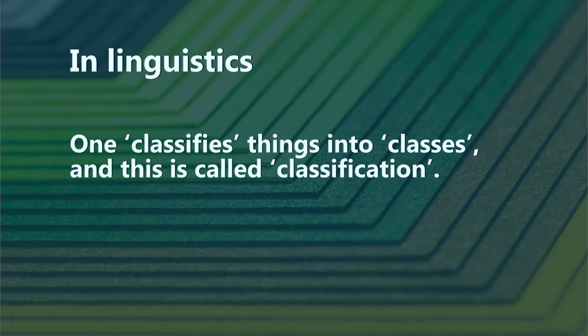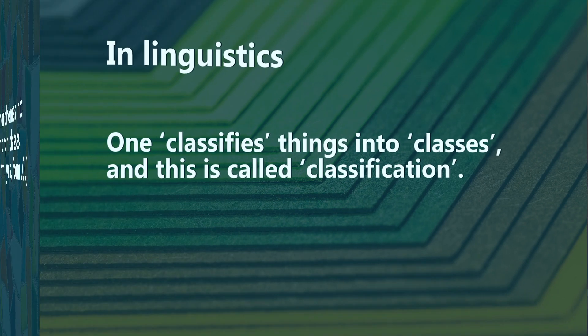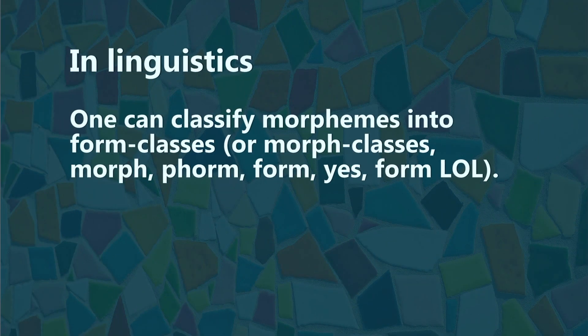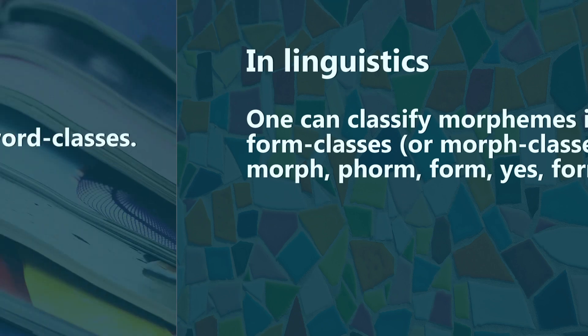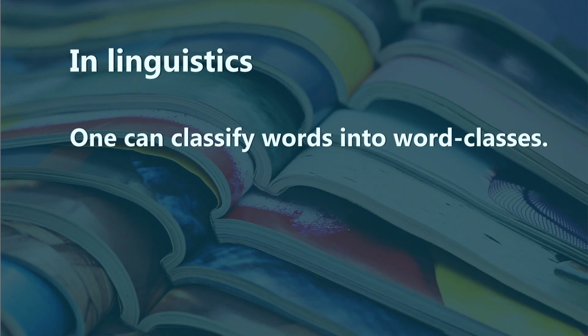The word 'class' has derivations. One classifies — 'classify' being the verb — things into classes, and this is called classification. For example, one can classify morphemes into form classes, and in the same way you can classify words into word classes, which is what we're going to talk about today: word class.